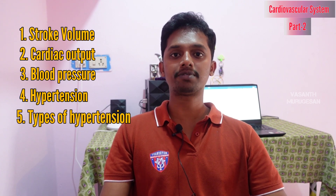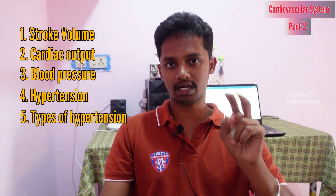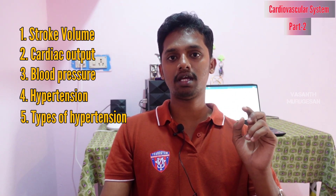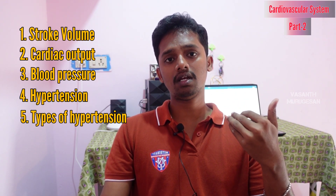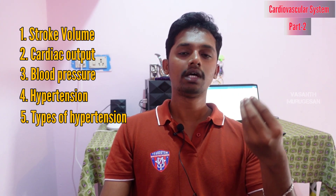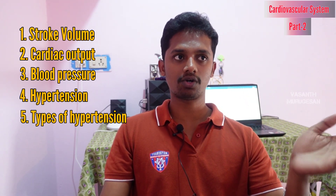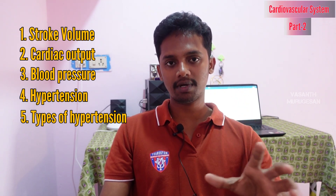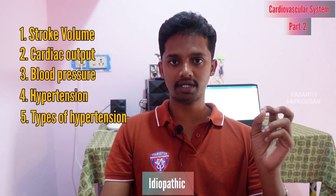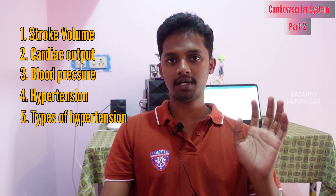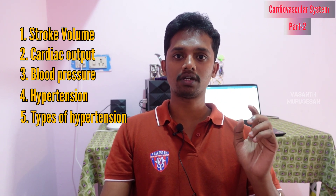Next are the types of hypertension. There are two types: primary hypertension and secondary hypertension. Primary hypertension is when we don't know the exact reason or cause of the high blood pressure. It occurs without a clearly identifiable disease or reason. This is called idiopathic hypertension, meaning it has no known cause. It is also called primary hypertension or essential hypertension.